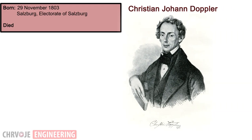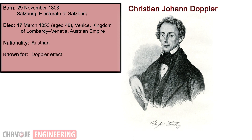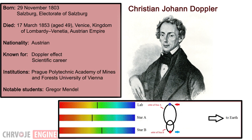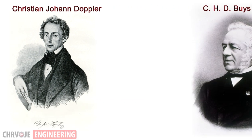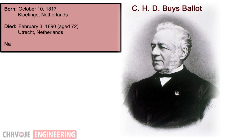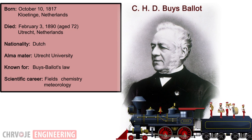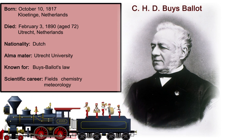The Austrian mathematician and physicist Christian Doppler developed a theory in 1842 to explain the colors of binary stars. He argued that the observed frequency of an electromagnetic wave or sound wave depends on the relative speed of the source and the observer. Dutch scientist Christoph Hendrik Diederik Bayes Ballet tested the Doppler effect for sound waves in 1845 by using a group of musicians playing a calibrated note on a train in the Utrecht Amsterdam Line.